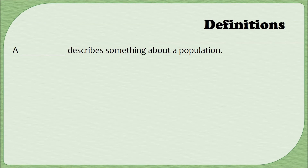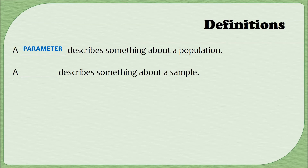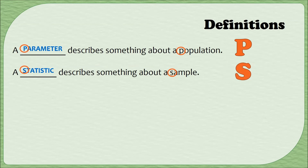Now that we've talked about populations and samples, we're going to have numbers, and I want to know whether a number describes something about a population or something about a sample. If it describes a population, the value is called a parameter. If it describes a sample, we call it a statistic. There's a little trick to remember which is which: parameter and population both start with the letter P, and statistic and sample both start with the letter S. So a parameter is about a population, and a statistic is about a sample.